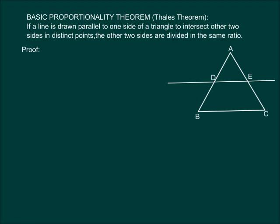Let us start with the proof. We are given a triangle ABC in which a line parallel to side BC intersects the other two sides AB and AC at the points D and E respectively.